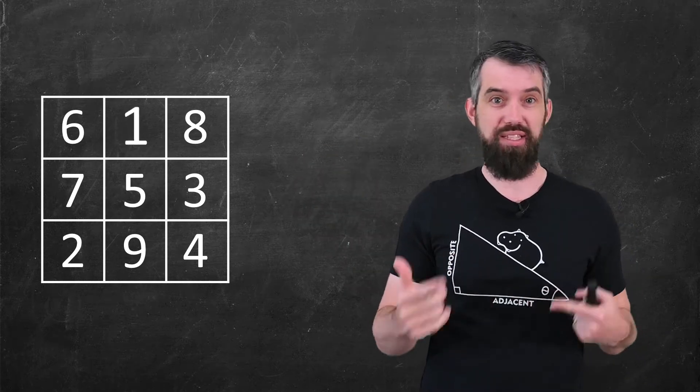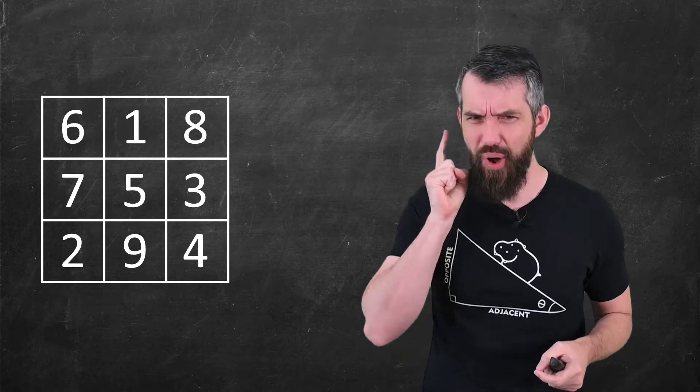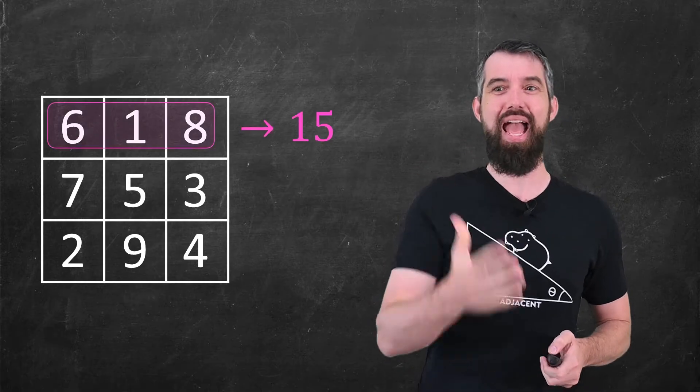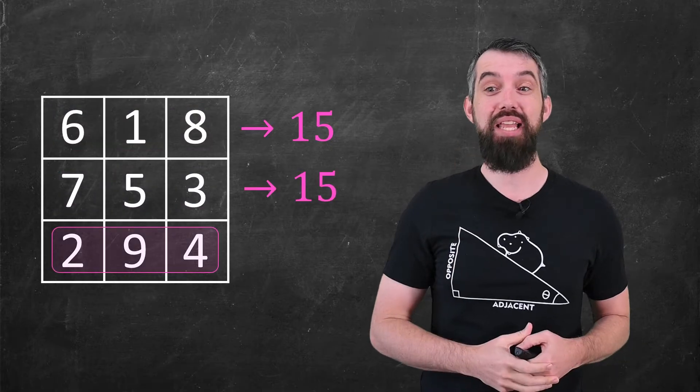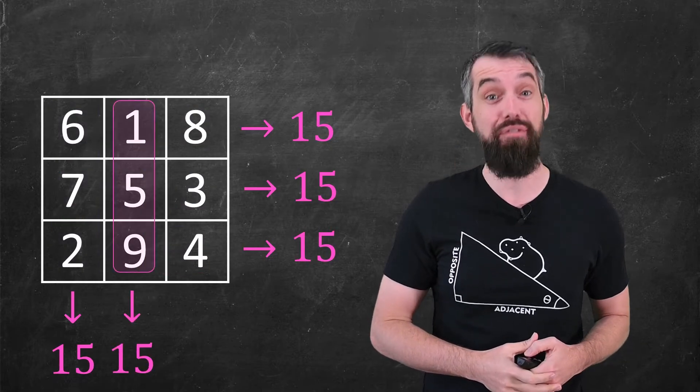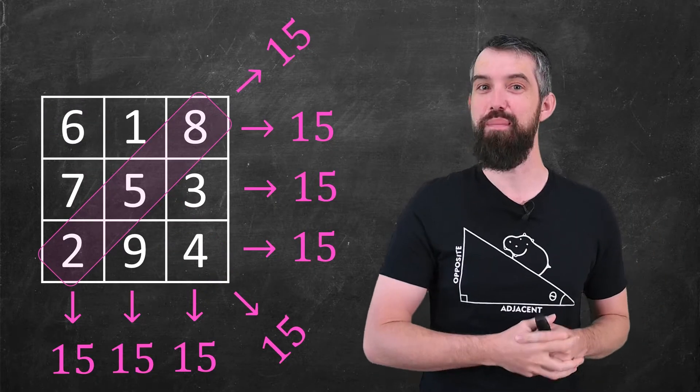This is a magic square. It consists of every integer between 1 and 9, exactly once. But it also has the property that if I add up, for example, the top row, I get 15. But that is the same sum for every single row, every single column, and both of the two diagonals. Magic squares are indeed kind of magical.